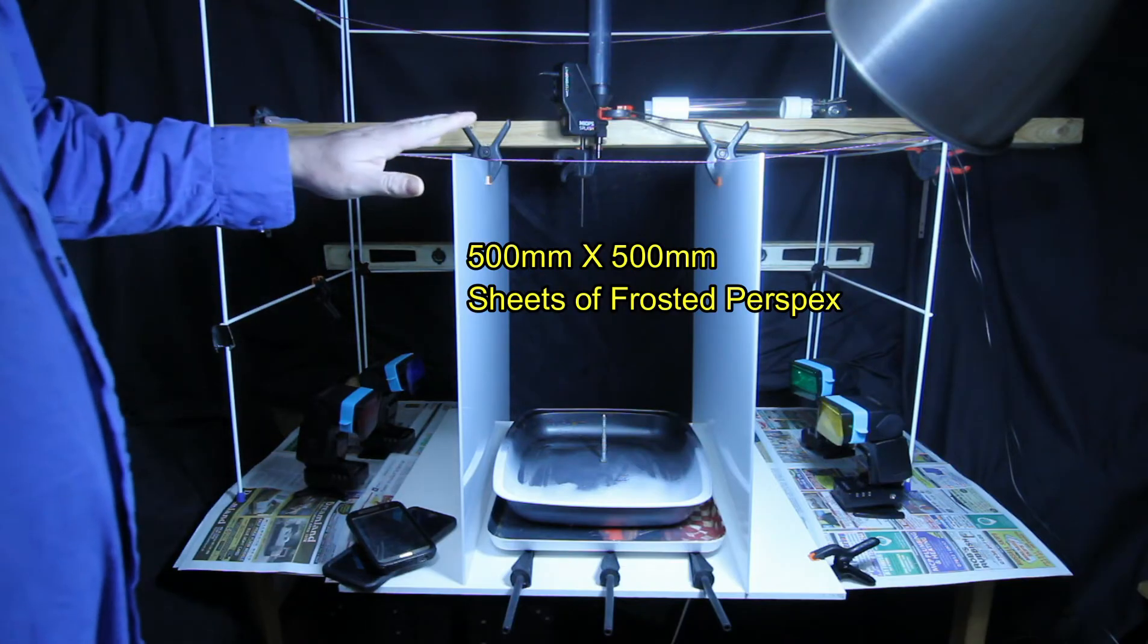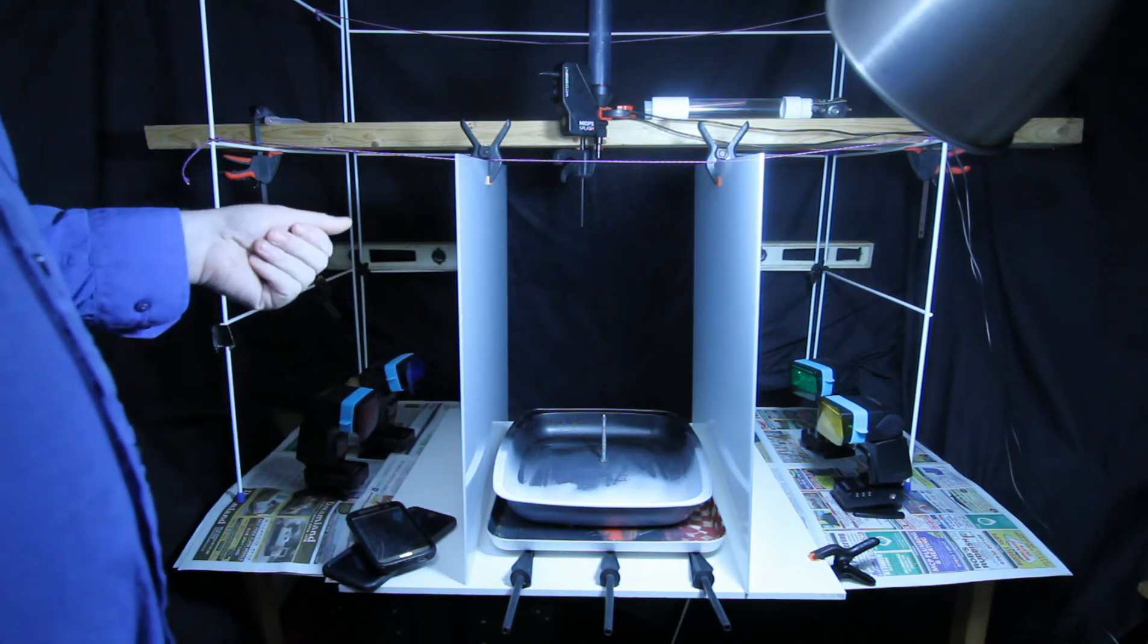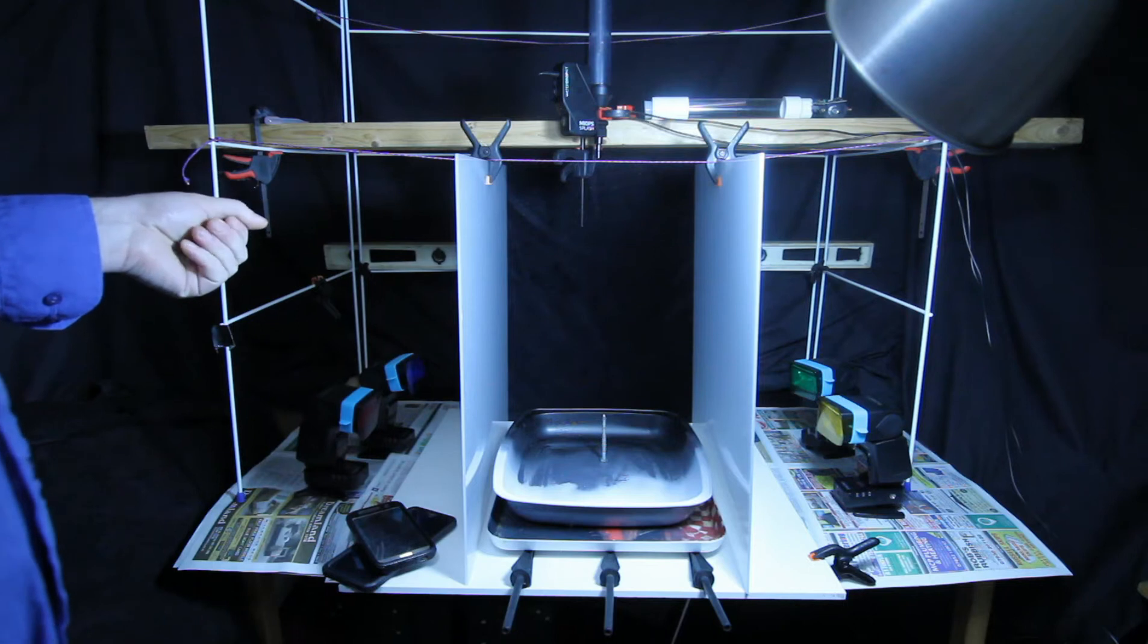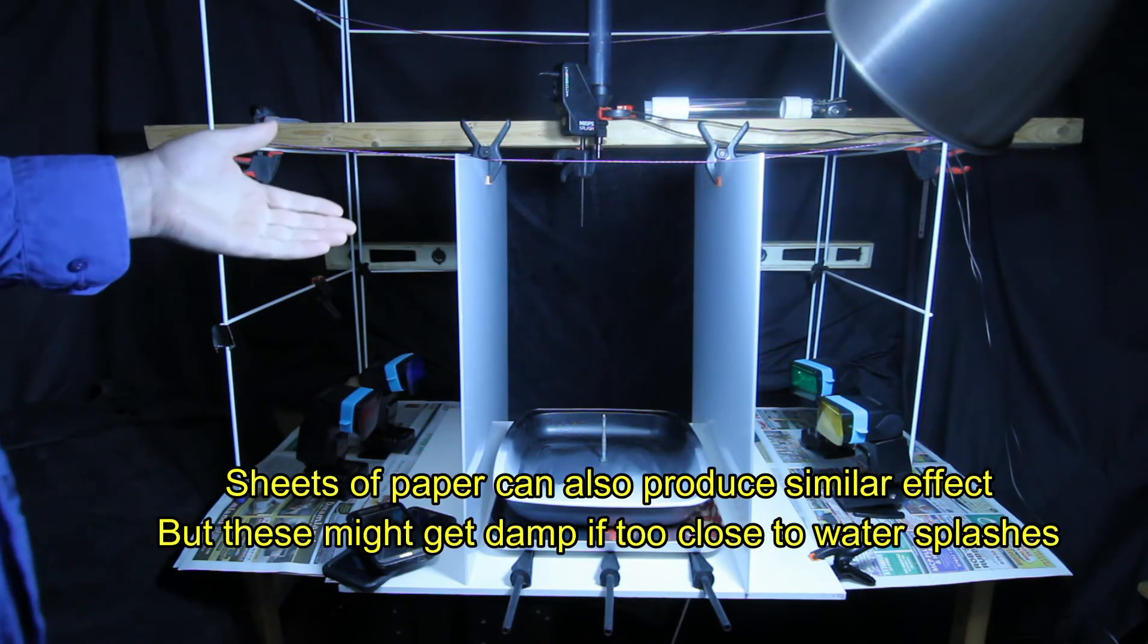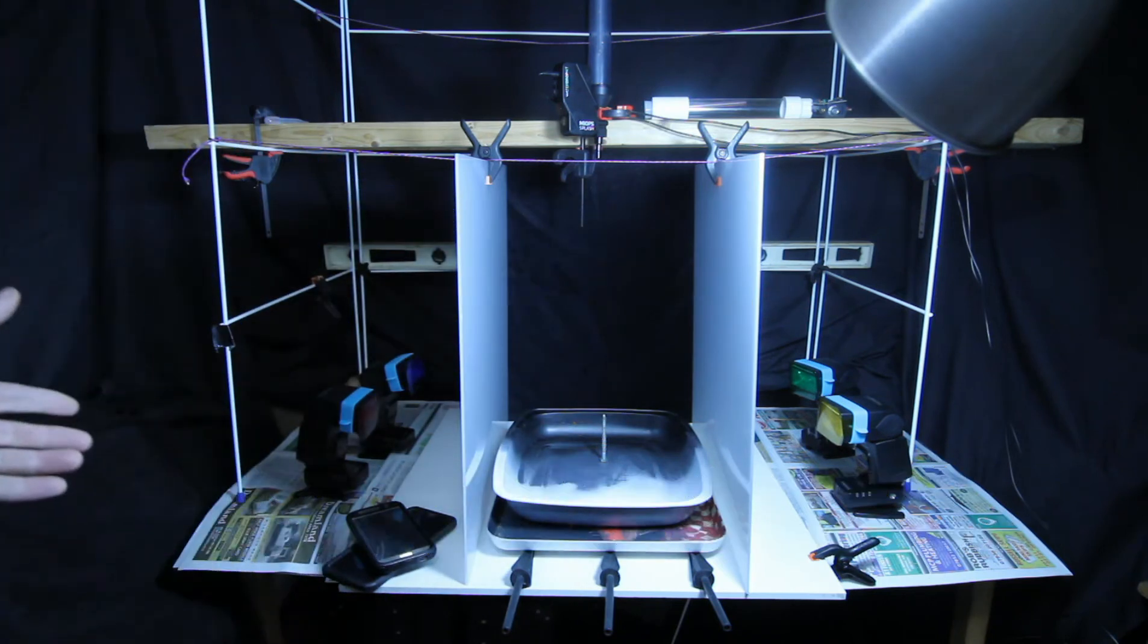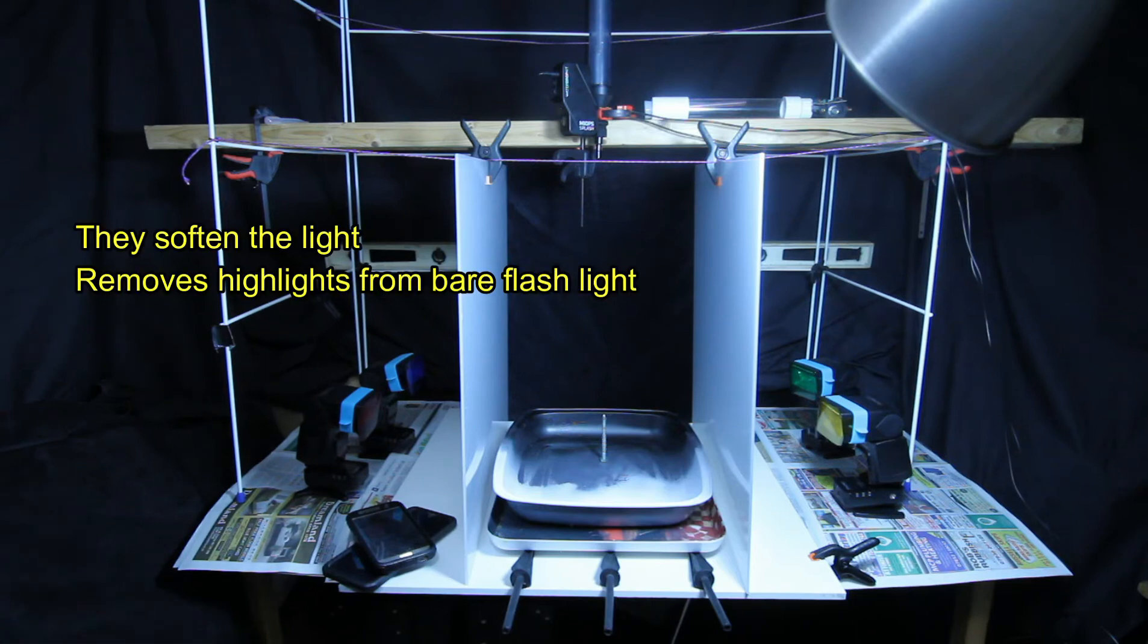On the sides here you'll see I've got Perspex. 500x500 sheets of frosted Perspex. I think it was 80% letting through of light. It acts like a soft box. I happen to have two flashes on each side. You can still do it with one or two on each side but you don't get the burnt out highlights on the collisions on the water drop themselves.